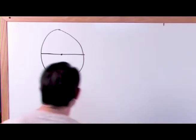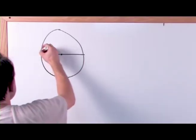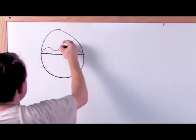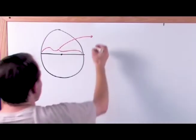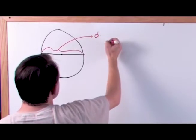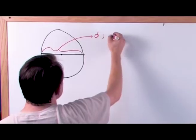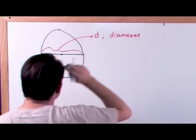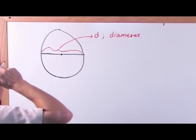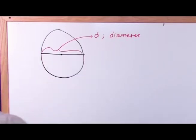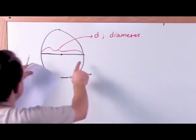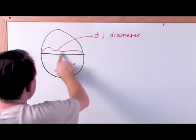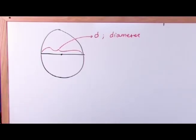That line has a very special name. This distance from here to here has a very special name and it's called D, which means diameter. So it's a term you're learning here. This is the diameter of the circle — all it means is the distance that goes through the center of the circle from one side to the other. It's called the diameter.